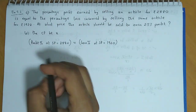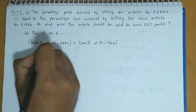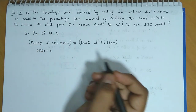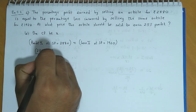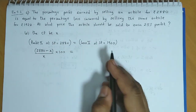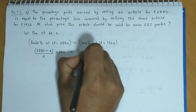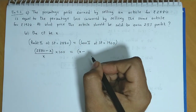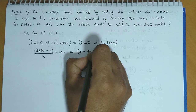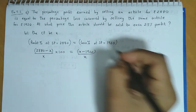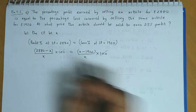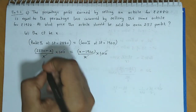Now, profit percentage हम ढूंढते हैं as SP minus CP, यानि 2880 minus x upon CP that is x, into 100, is equal to loss percentage में we have CP minus SP. Loss कब होगा? When CP is greater than the selling price. So, x minus 1920 divided by x into 100. अब दोनो तरफ 100 यह factor cancel कर सकते हैं, यह x term भी दोनो तरफ cancel हो जाता है.